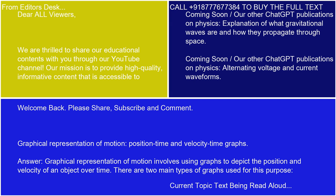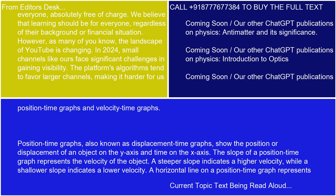Graphical representation of motion involves using graphs to depict the position and velocity of an object over time. There are two main types of graphs used for this purpose: Position Time Graphs and Velocity Time Graphs.